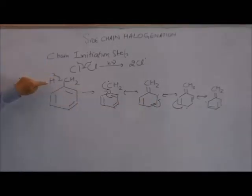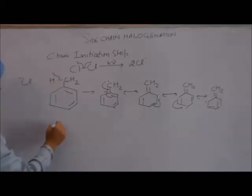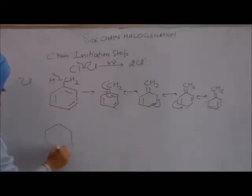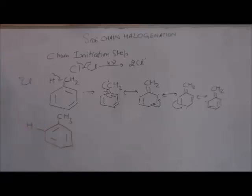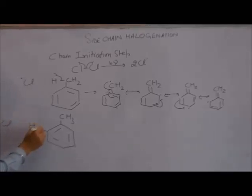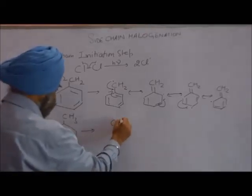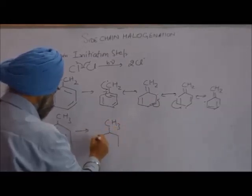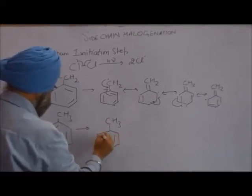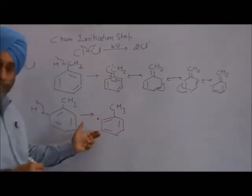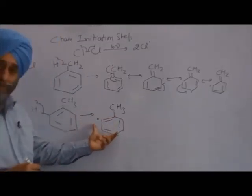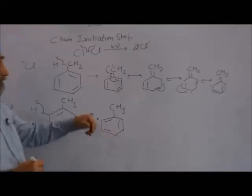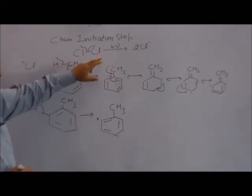So these resonating structures show that the benzyl free radical is stabilized due to resonance. Hence the hydrogen from the CH₃ group is extracted by the chlorine free radical. But if the ring hydrogen is abstracted by chlorine, this does not result in any stabilization by resonance.